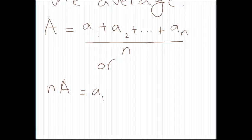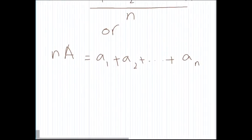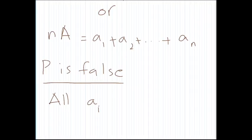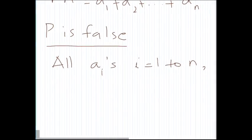P is false. So proposition P is false means what? P is false means that all ai's for i equals 1 to n are less than